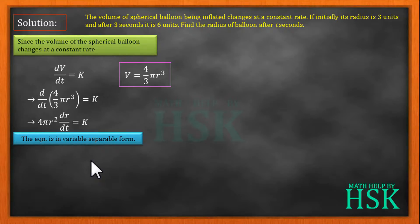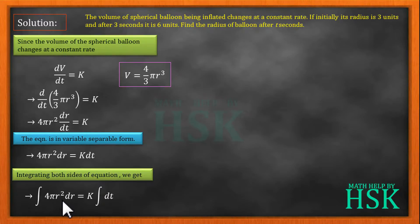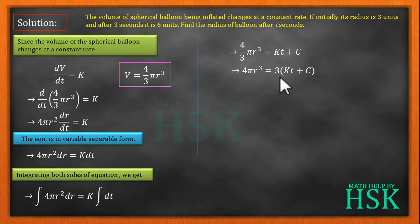Separating the variables and integrating both sides: the integral of 4πr² dr equals k times the integral of dt. The integral of r² is r³/3, giving (4/3)πr³ = kt + c. On cross multiplication, we get 4πr³ = 3(kt + c). This is marked as equation number one.